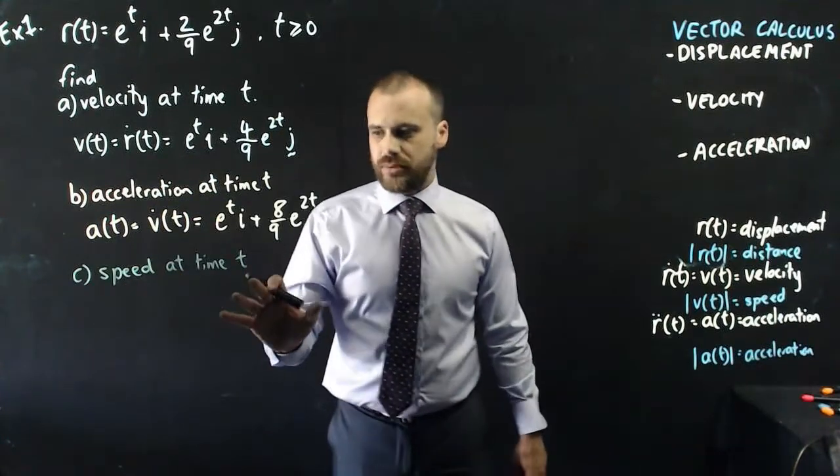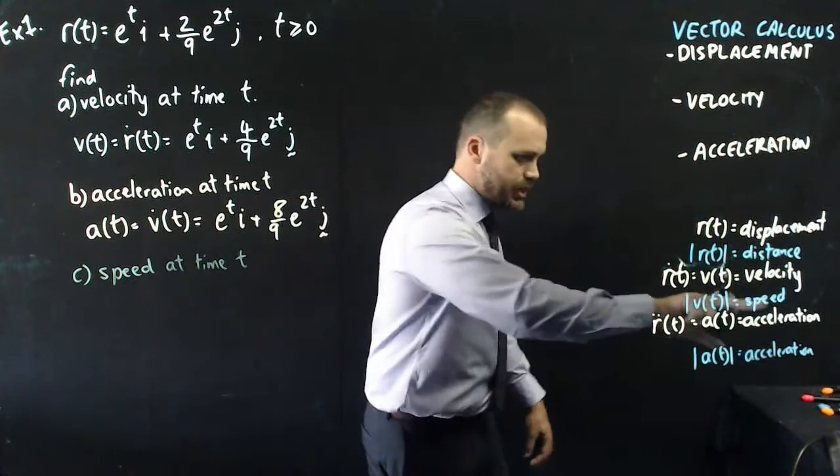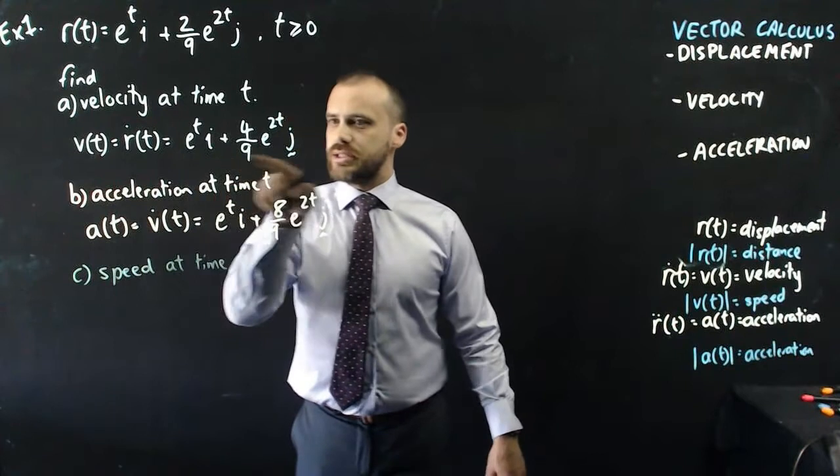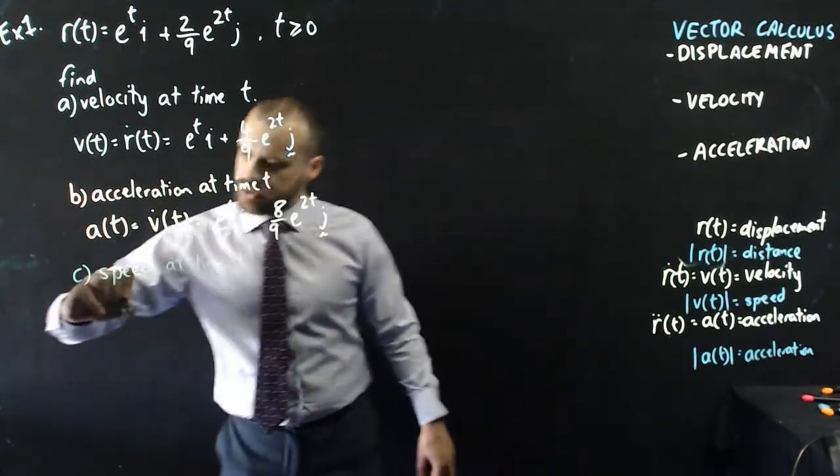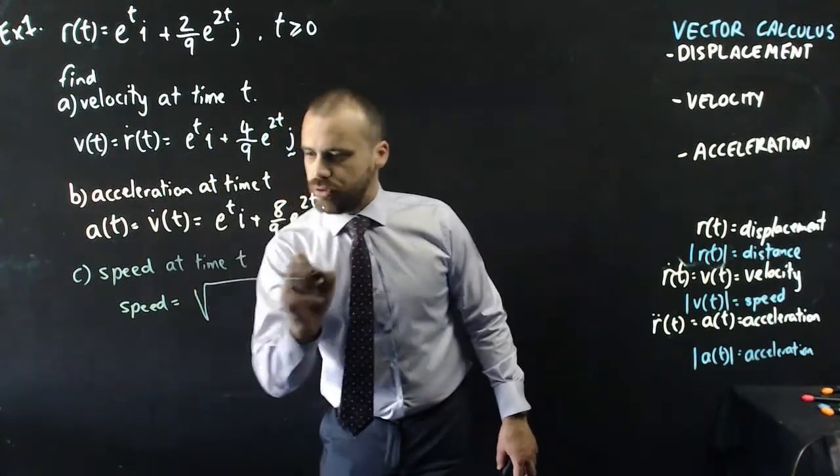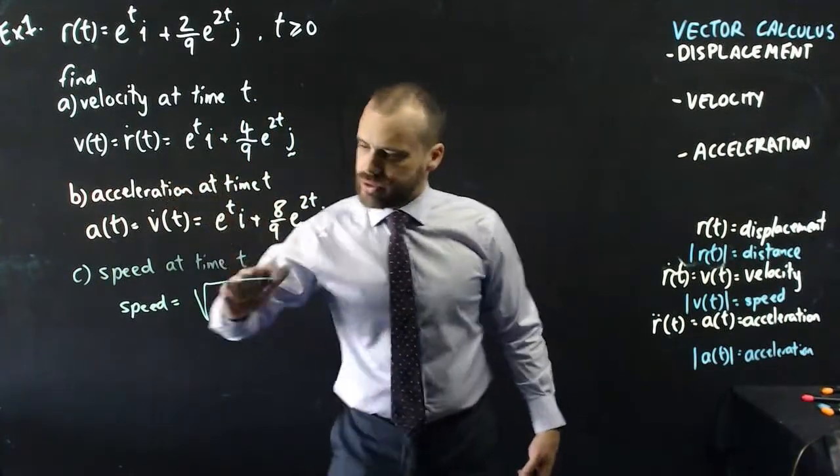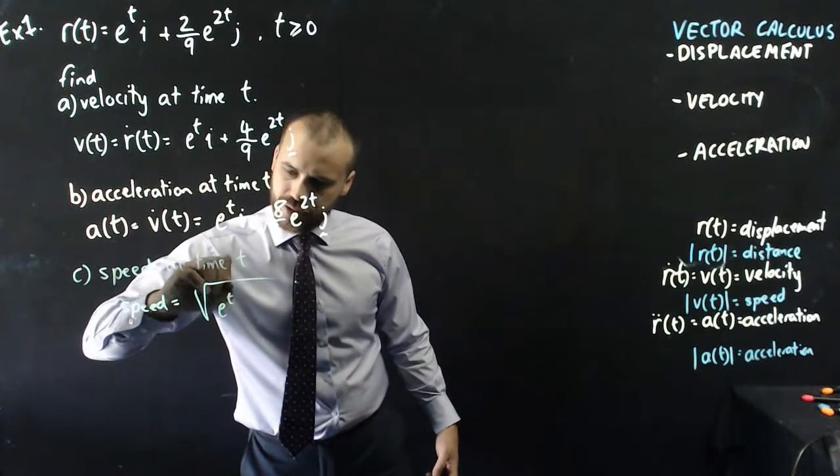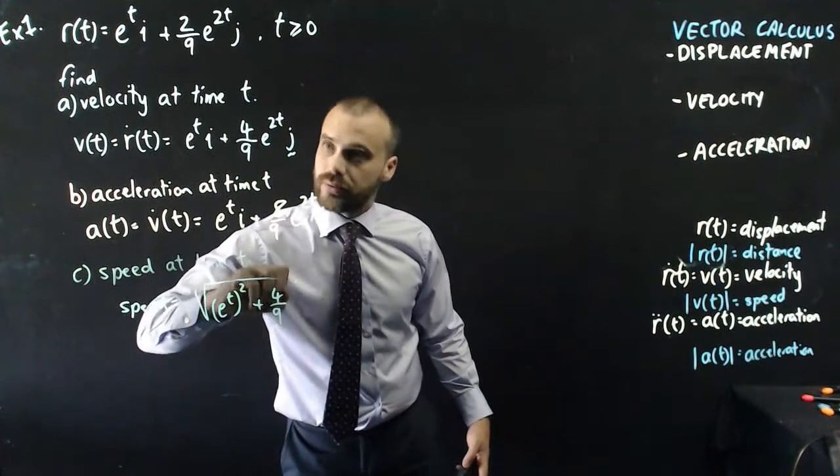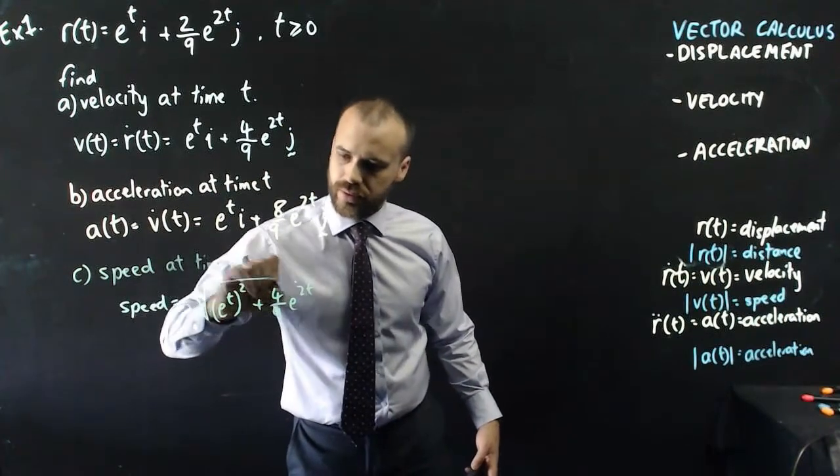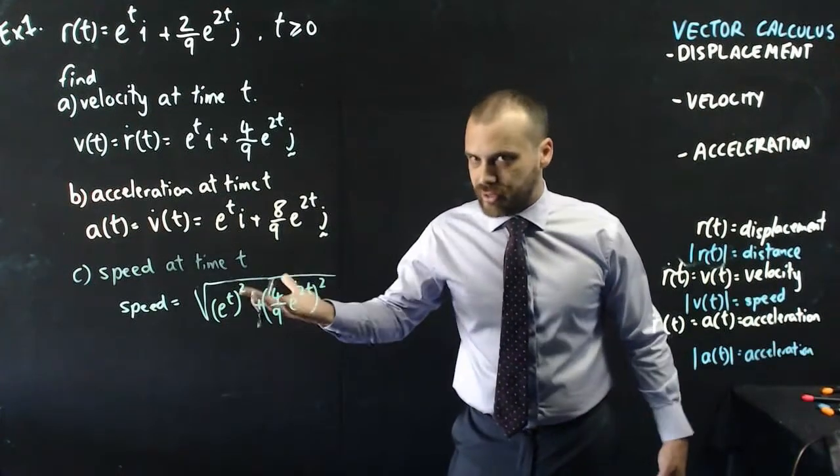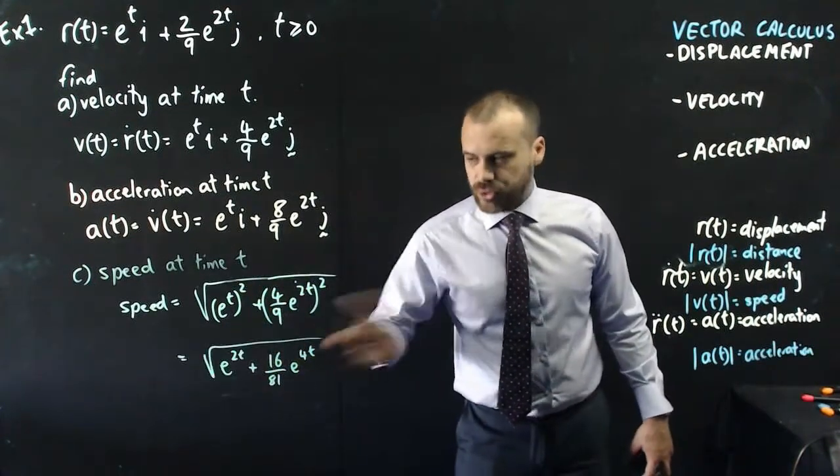And, finally, let's find the speed at time t. Now, we know that speed is equal to the magnitude of velocity. So, velocity is this thing here, right? So, we can say speed is equal to the square root of the i component squared, so e to the t squared, plus the j component, e to the 2t squared. Now, you can probably simplify that a little bit, and you get something that looks a little more like that.